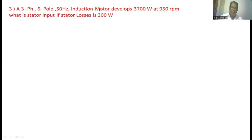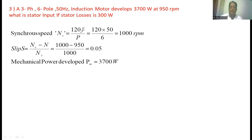A 3-phase, 6-pole, 50 Hz induction motor develops 3900 watts at 950 rpm. What is the stator input? The stator losses are 300 watts. The synchronous speed ns = 120f / p = 120 × 50 / 6 = 1000 rpm. The motor runs at 950 rpm, so the slip s = (1000 − 950) / 1000 = 0.05.